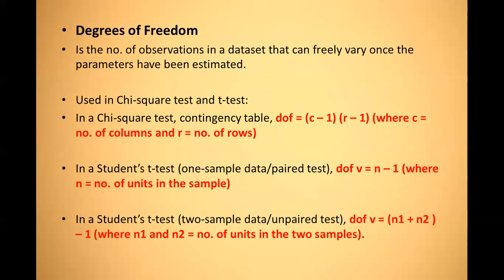Moving to degree of freedom: it is the number of observations in a data set that can freely vary once the parameters have been estimated. It is used in chi-square test and t-test. In chi-square test it is calculated by (c−1)×(r−1), where c is columns and r is rows. In the paired t-test, degree of freedom is n−1; in unpaired t-test it is n₁ + n₂ − 2, where n₁ and n₂ are the number of units in the two samples.